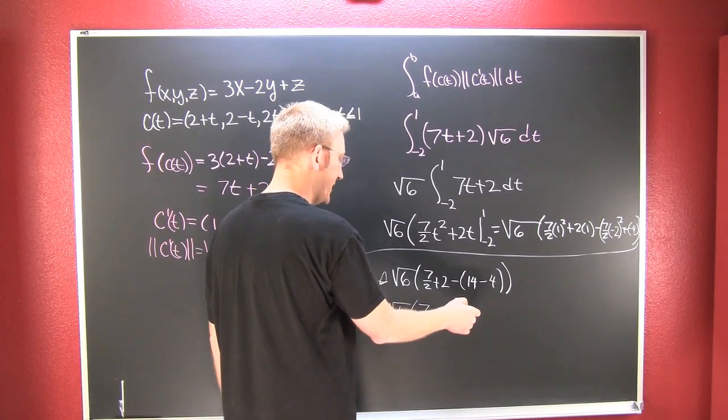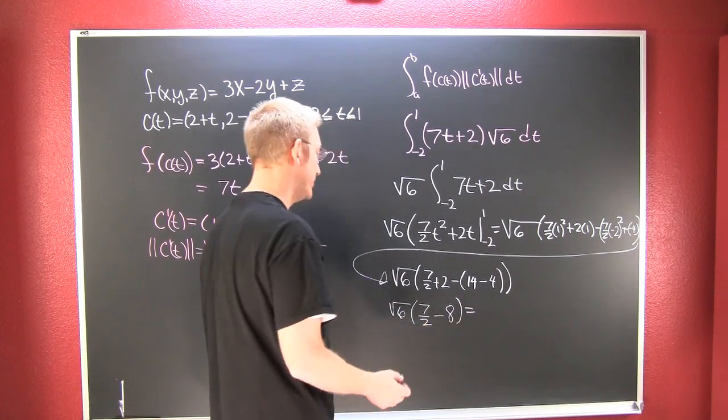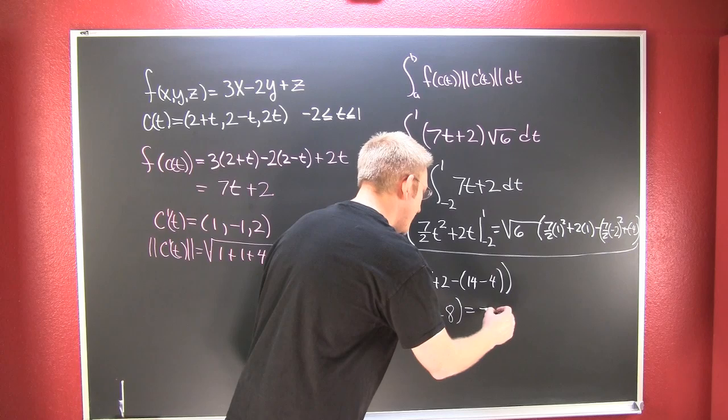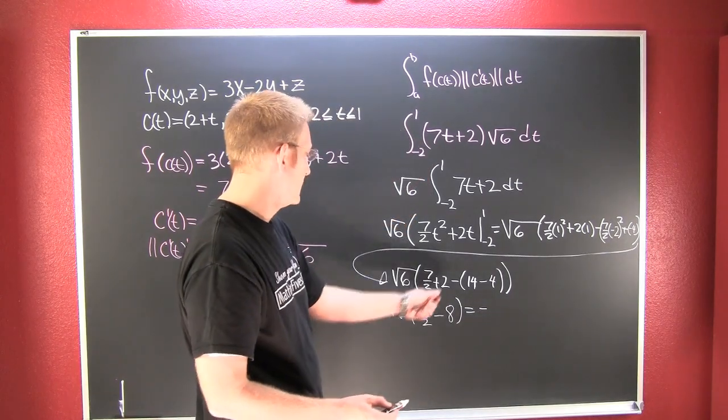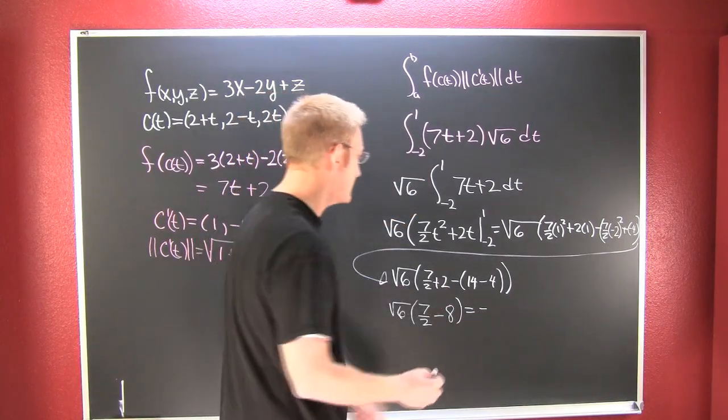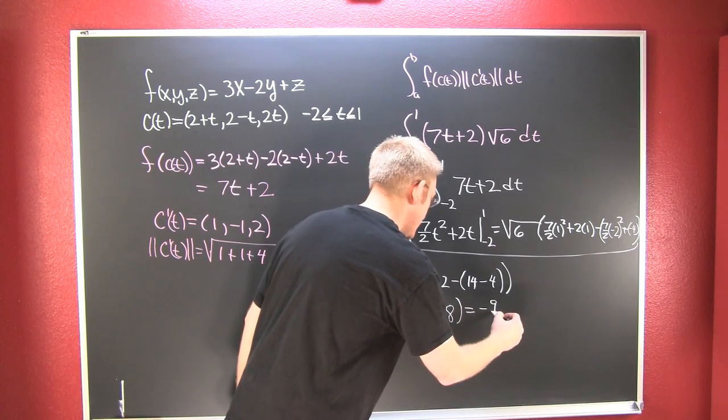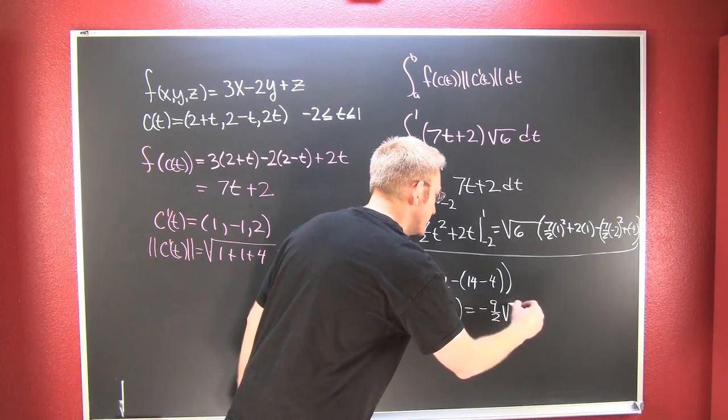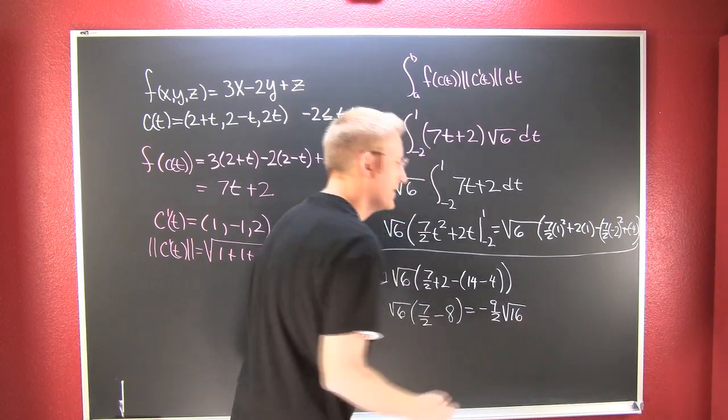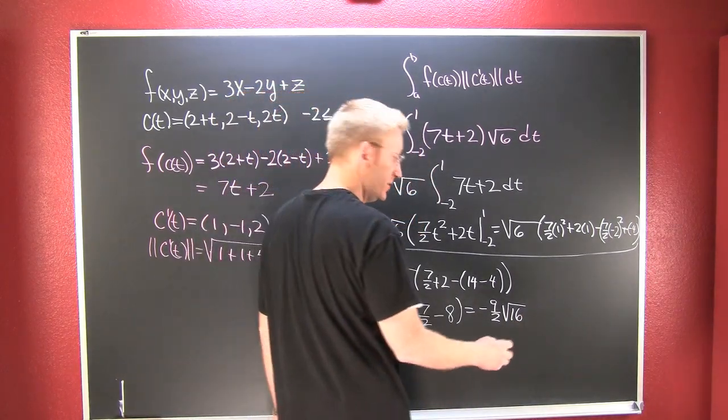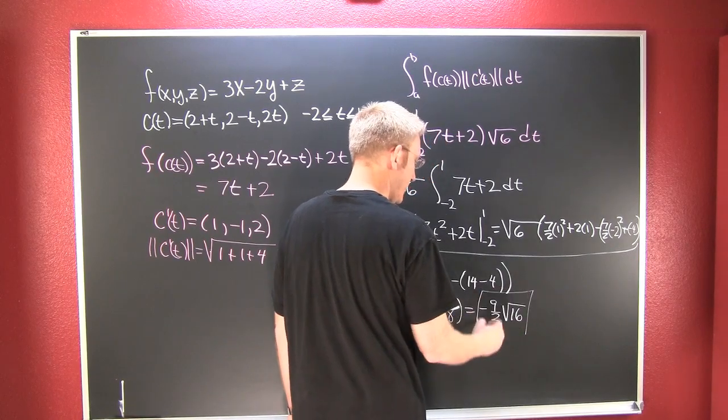So I'm almost done. Let me clean that up just a little bit more. So I'm going to add, which is minus 9 halves. Let's see, 16 minus 7 is going to be minus 9 halves.